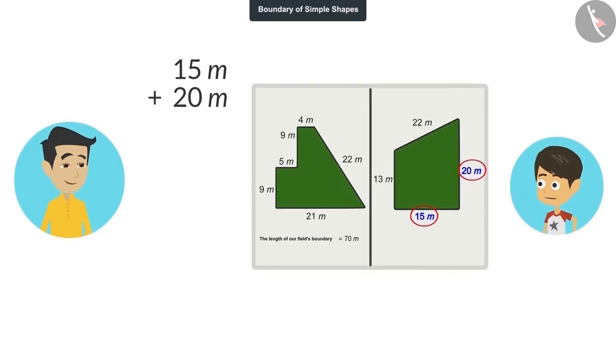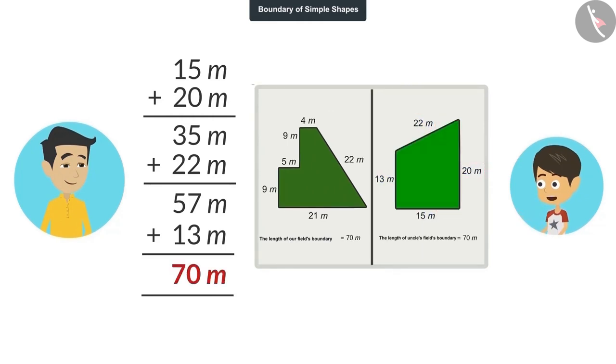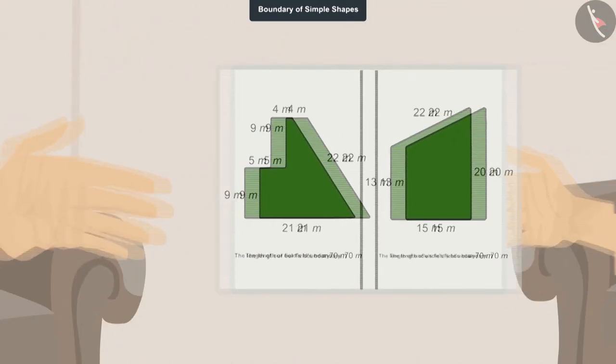15 added to 20 is 35 meters. 22 meters added to 35 is 57 meters. And when 13 meters are added to 57 meters, the answer will be 70 meters. Papa, the length of uncle's farm's boundary is 70 meters. Show me. Here it is.